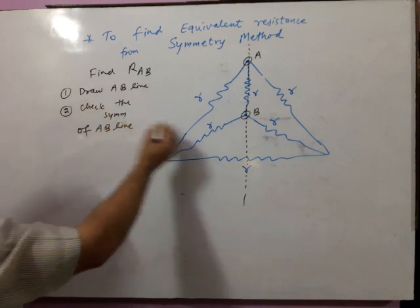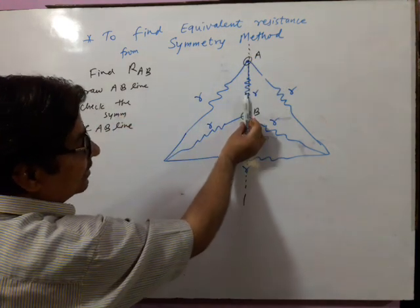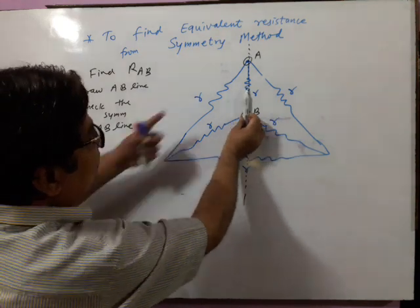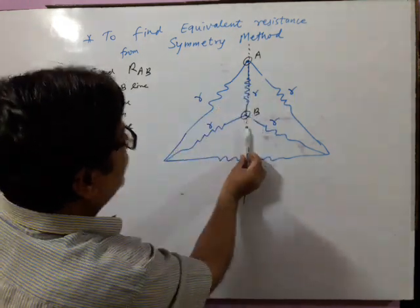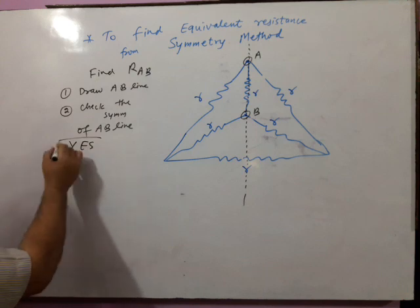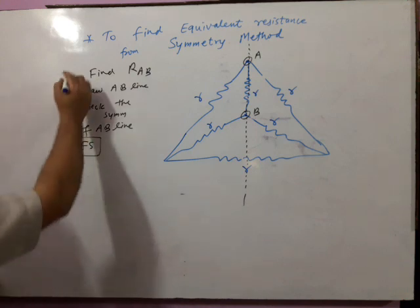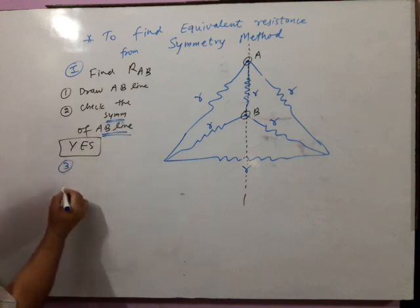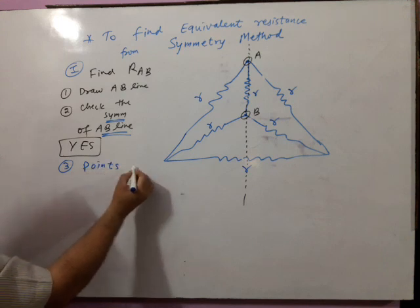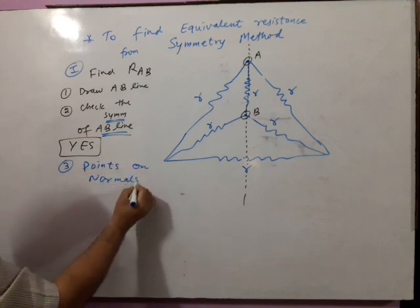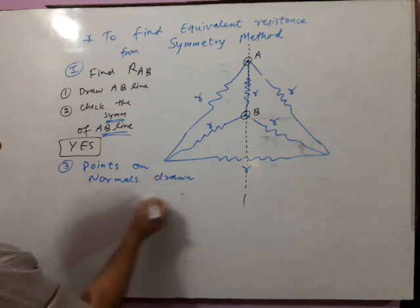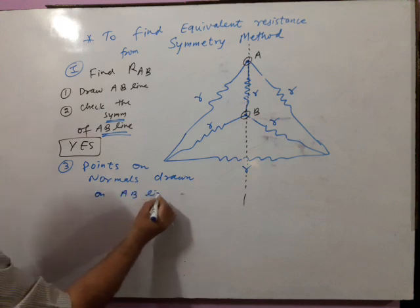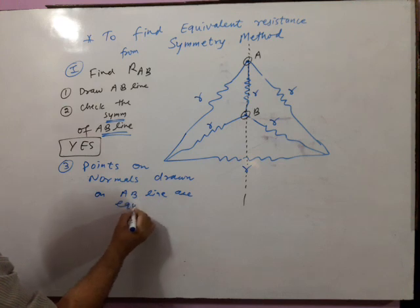First is draw the AB line. Second is check the symmetry of this line — symmetry means if a mirror is placed, then the image is visible or not. The answer is the image is visible: R, R, R, R, R, R/2, R/2. Yes, this AB line is symmetrical. The first technique tells us: if this AB line is symmetrical, then points on normals drawn on the AB line are equipotentials.